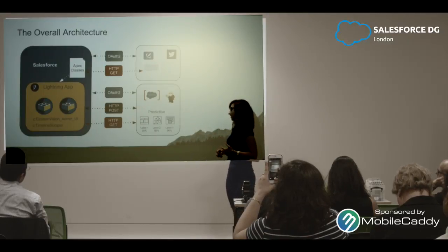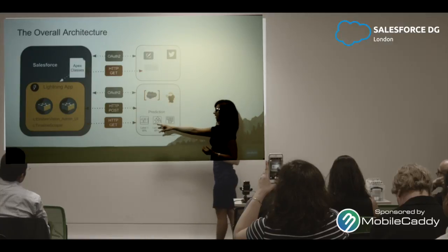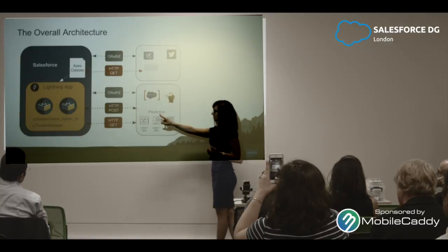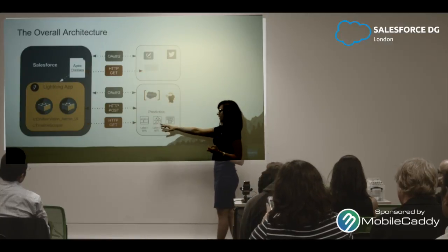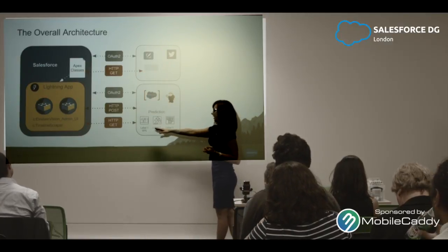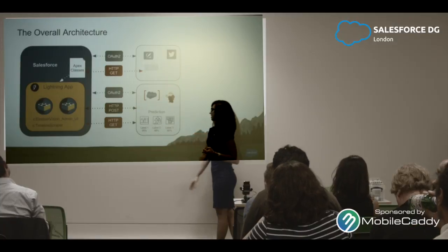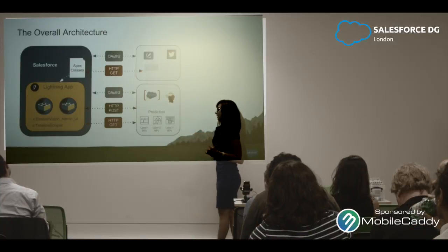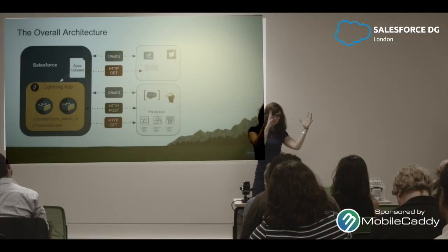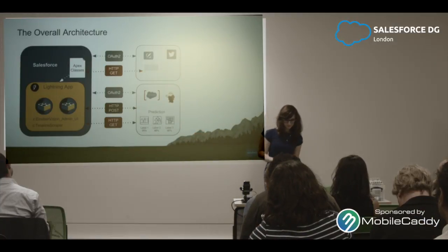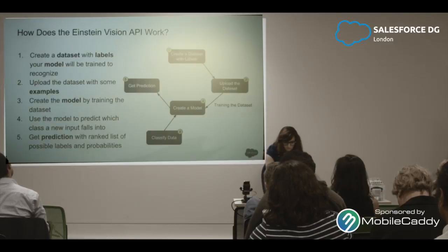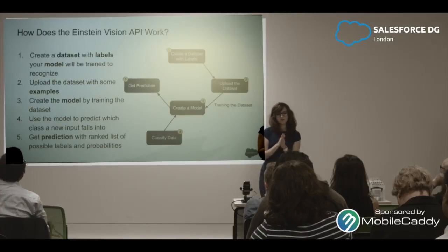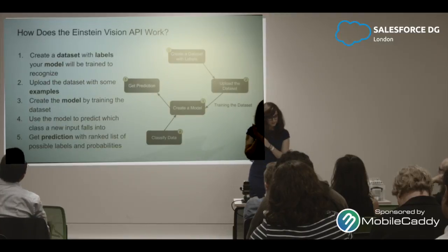The essence here is the prediction: what kind of label an image gets, and the probability it belongs to that class.